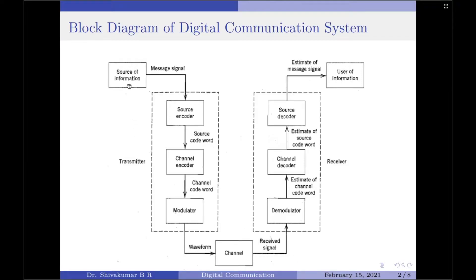At the input, we have a digital source which generates a message signal. The transmitter consists of three blocks namely source encoder, channel encoder and modulator. The receiver once again consists of three blocks namely source decoder, channel decoder and demodulator.